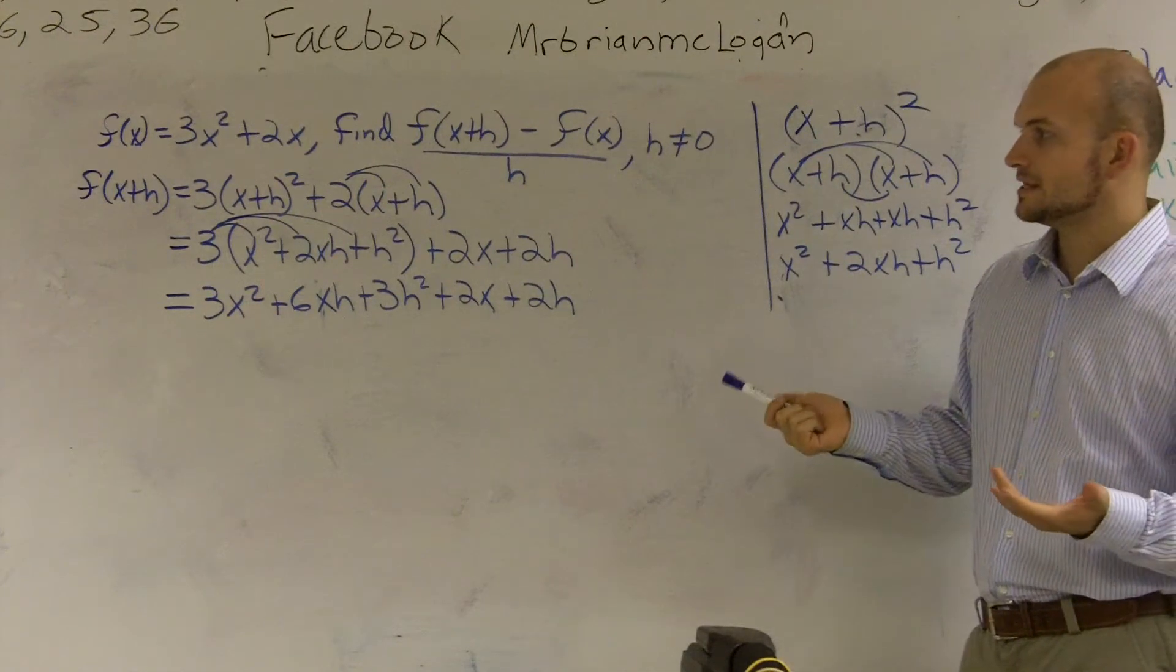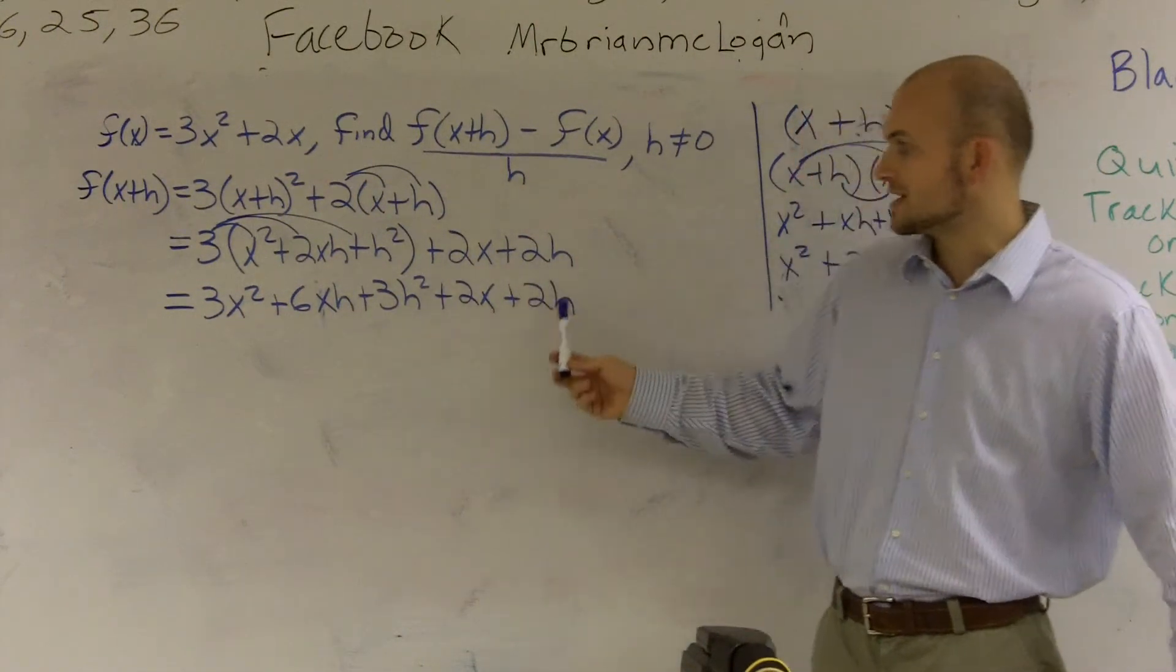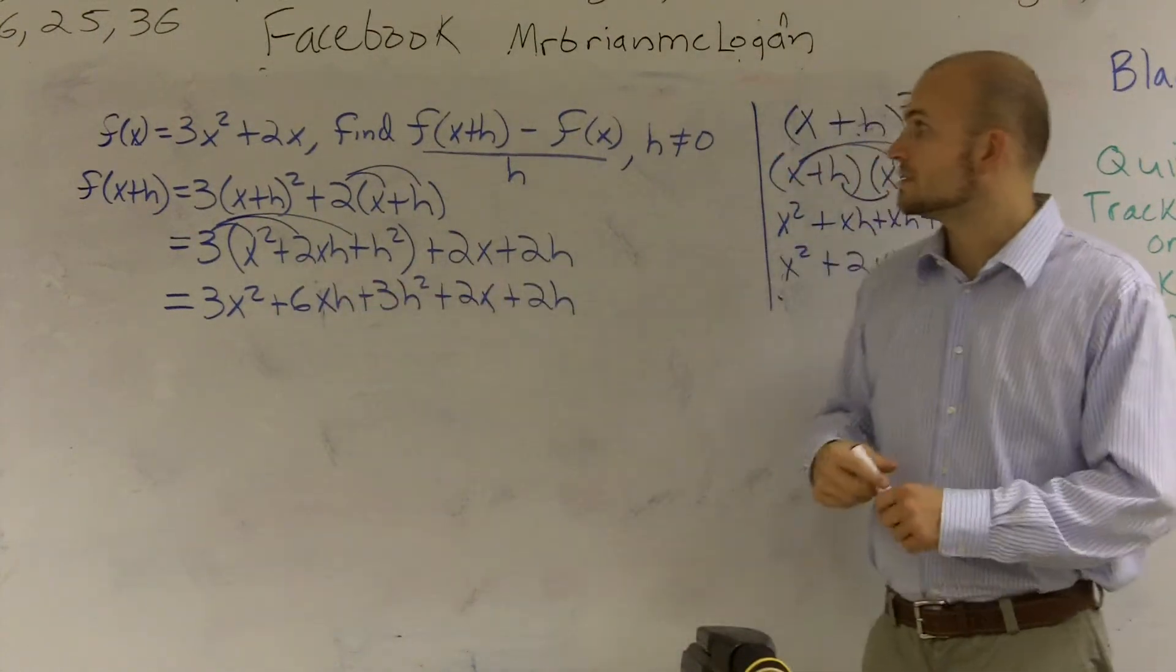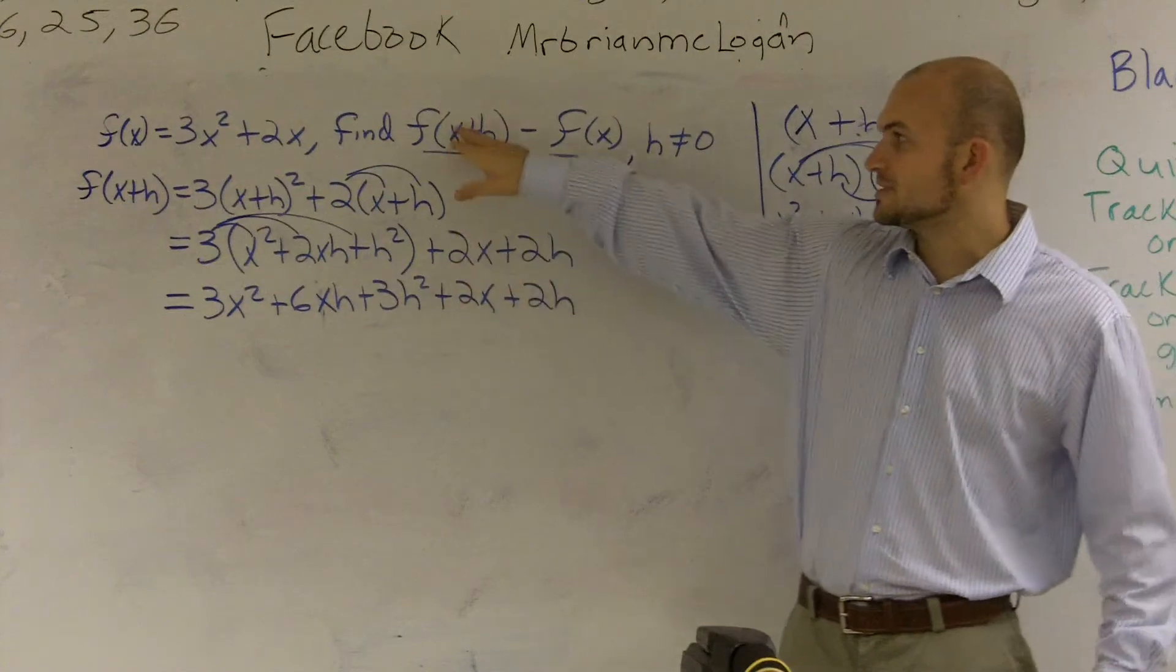Now, I can't combine any like terms because this is an $xh$, that's an $h^2$, that's a $2h$, and that's a $2x$. So I can't combine anything. So this is what $f(x + h)$ equals.